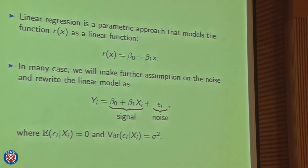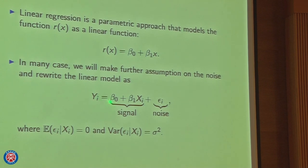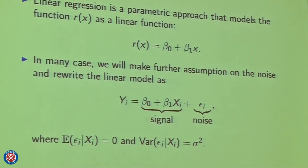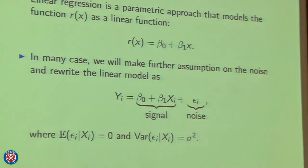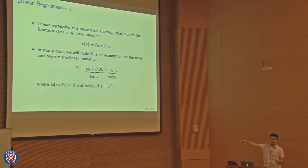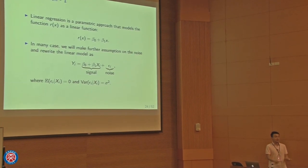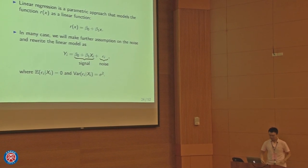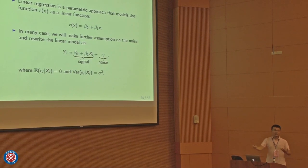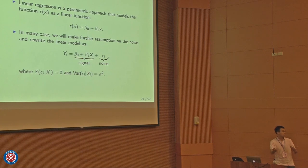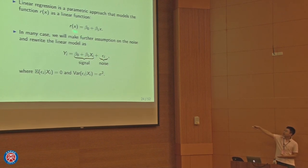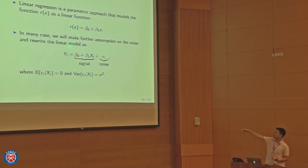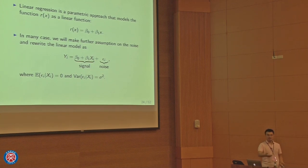This is called a signal-plus-noise model. Some people further assume the noise is Gaussian, but in many cases this is not required. In the linear regression, the goal is to find out the two parameters beta_0 (intercept) and beta_1 (slope). The classical approach — invented by Gauss, apparently for an astronomy problem — is the least squares method: find beta_0 and beta_1 that minimize the sum of squared residuals, sum of (yi - beta_0 - beta_1*xi)^2.